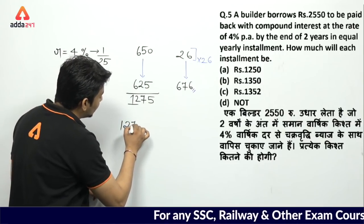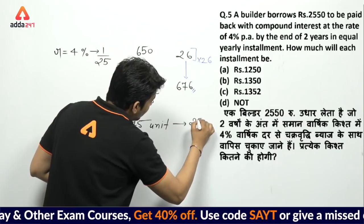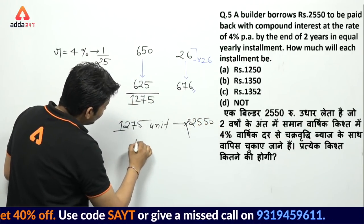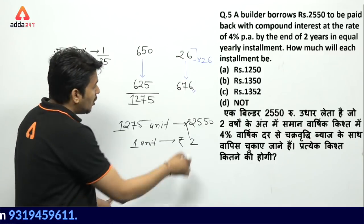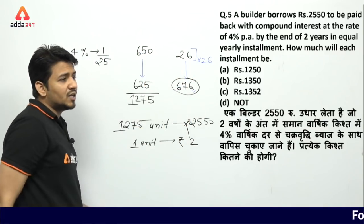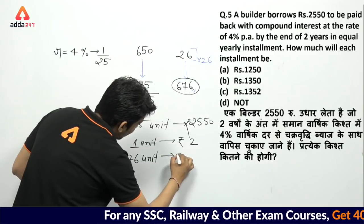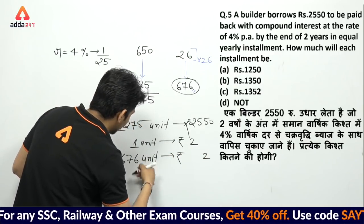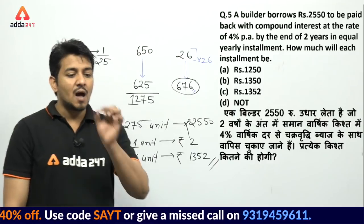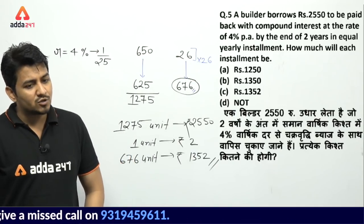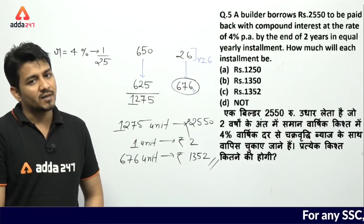So 1275 units = 2550 rupees. Therefore 1 unit = 2 rupees. Each installment is 676 units × 2 = 1352 rupees. If you pay 1352 rupees per installment, in 2 years at 4% compound interest, you will discharge the debt of 2550 rupees. If it were 3 years, you would write the cube below and solve similarly.